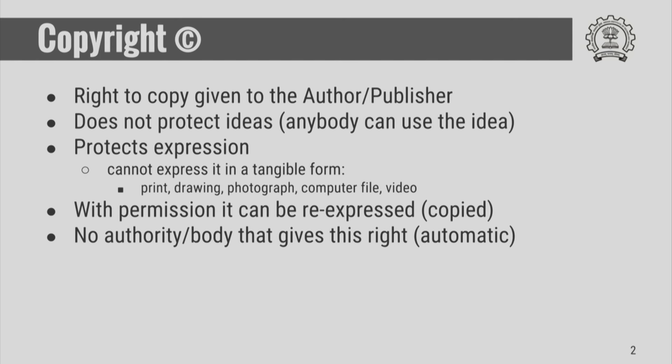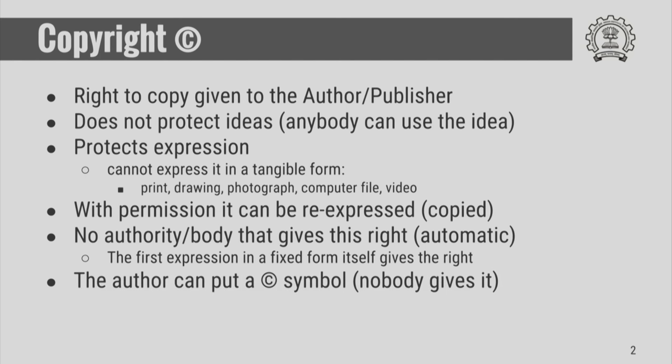Usually, in most countries, there is no particular authority or government body that gives a copyright. A copyright is automatic. The first expression in a fixed tangible form — such as print, drawing, draft, photograph, or computer file — is itself a right. The author can simply put a copyright symbol. Nobody gives this. It is not like a trademark symbol, which has to be registered. The author themselves can put a copyright symbol against their work.